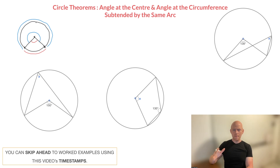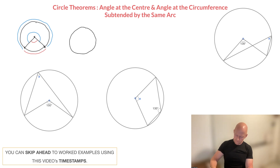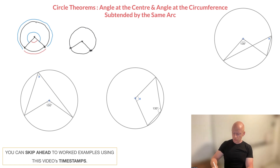Let me show you three configurations you want to make sure you recognize in order to use the theorem I'm about to state. For the first setup, I'll start by drawing a circle. The center is right here, and I'll add two points at the circumference — here and here — which I then join to the center of the circle. We can see that we now have two angles at the center of the circle.